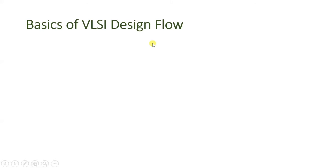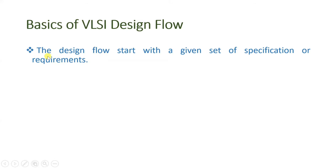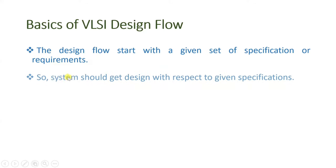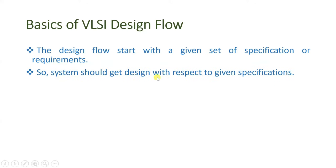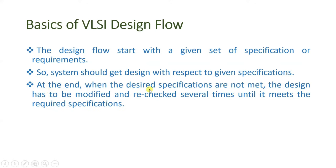VLSI design flow starts with specifications. The design flow will start with a given set of specifications or requirements, and the system should get designed with respect to those given specifications. When desired specifications are not met, the design has to be modified and rechecked several times until it meets the required specifications. Once we have a tolerable modification with which it can work properly, we go for fabrication of the design.